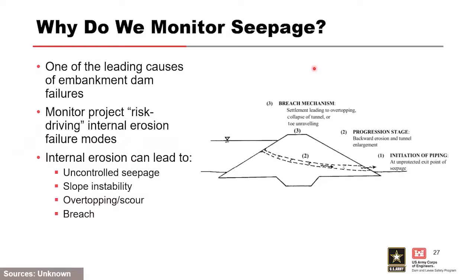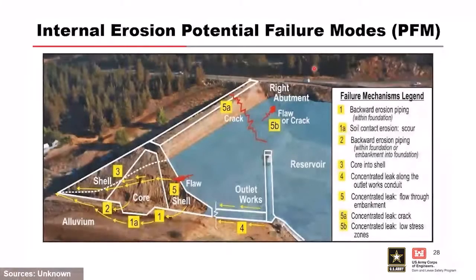Now moving into seepage monitoring: seepage is one of the leading causes of embankment dam failures. It's vital to know how water is being controlled and conveyed at a project, because dams will seep — but we must ensure that seepage is safe. We monitor the project for risk-driving internal erosion-related failure modes using this instrumentation. Internal erosion can lead to all sorts of failure modes, and there are case histories for most of them.